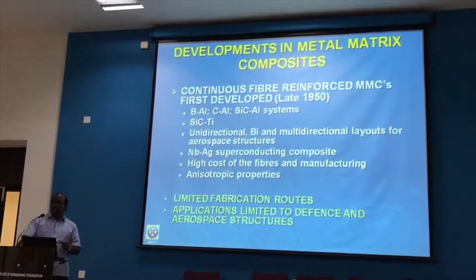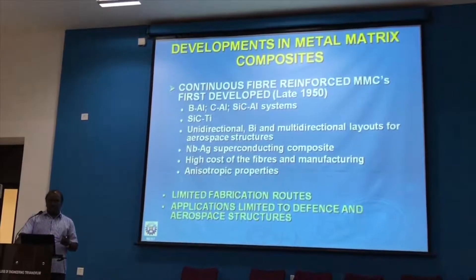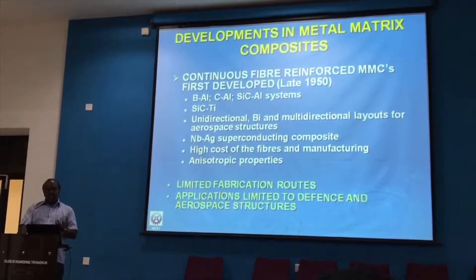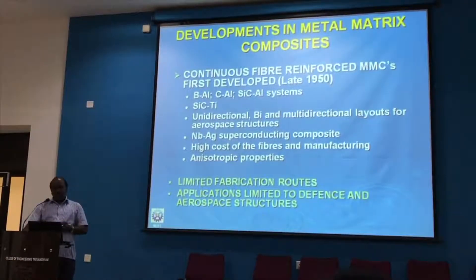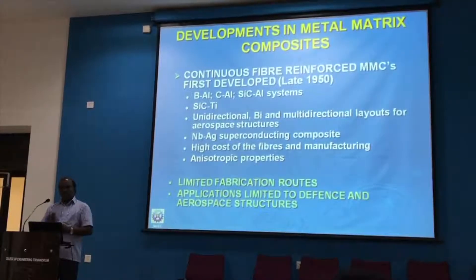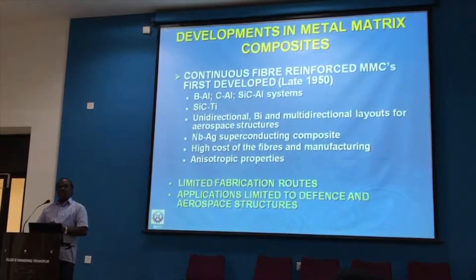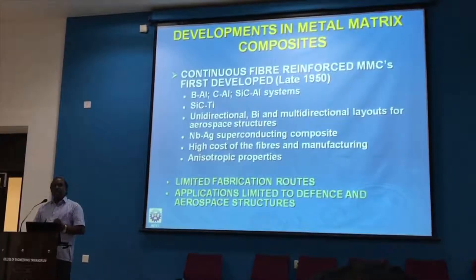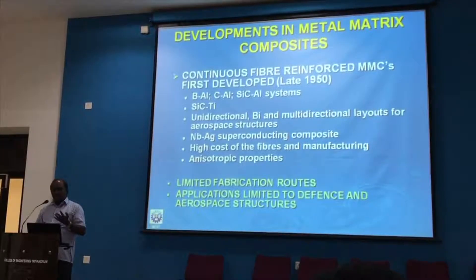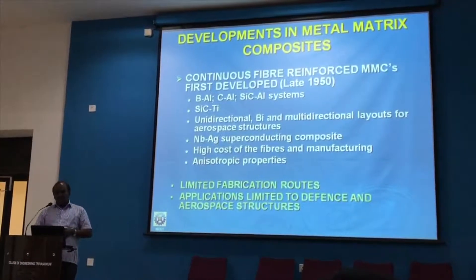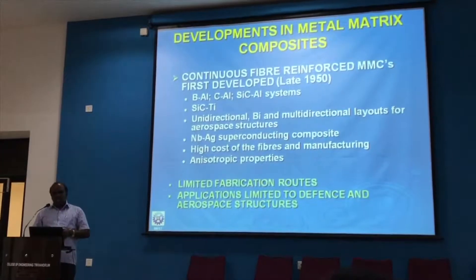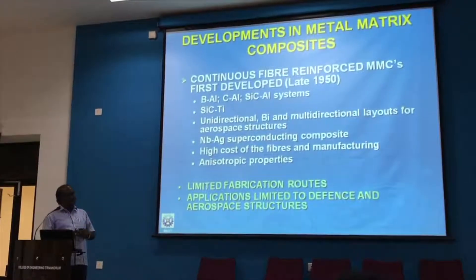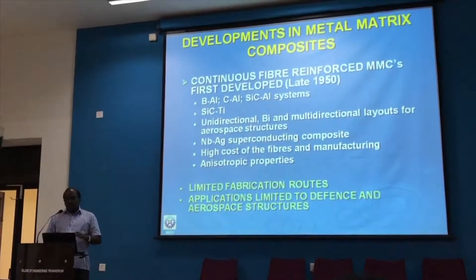The continuous fiber-reinforced composites are mainly based on boron — that means boron fibers reinforced inside aluminum alloys — or carbon fibers reinforced into aluminum alloys, or silicon carbide fibers reinforced. And SiC with titanium is also used.